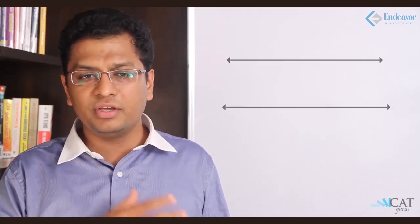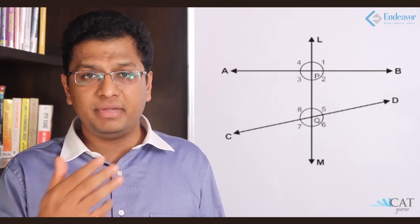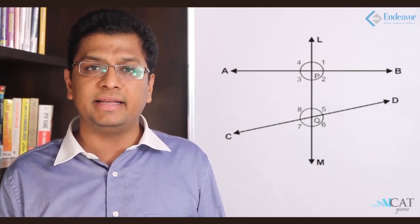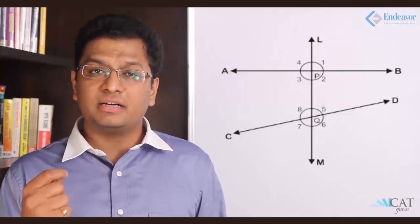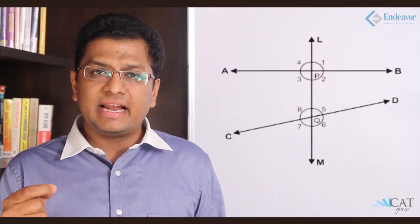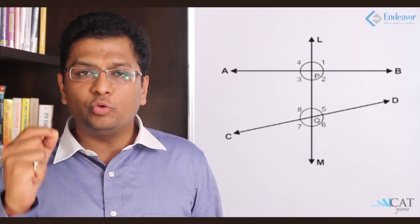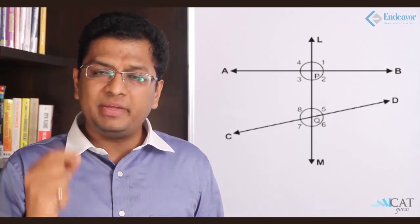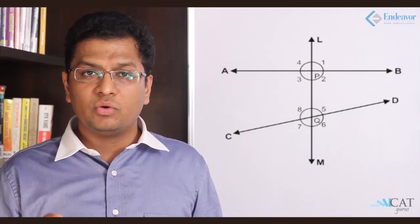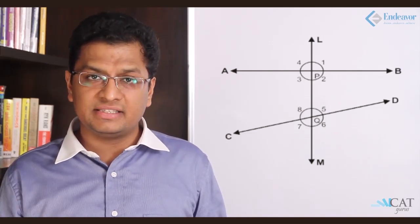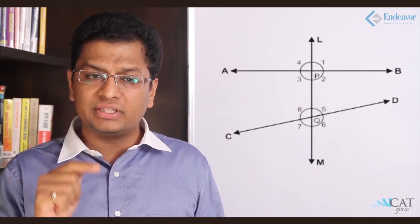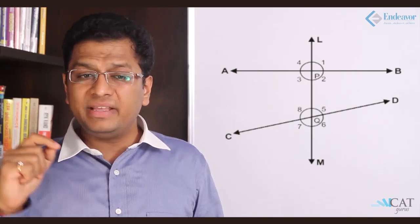In this diagram, AB is one line, CD is another line, and LM is the third line. There are eight angles marked in the diagram. An angle is formed when two lines intersect at a given point. Point P is where LM and AB intersect, making four angles — angles 1, 2, 3, and 4 — because both lines are continuous and don't end at that point.